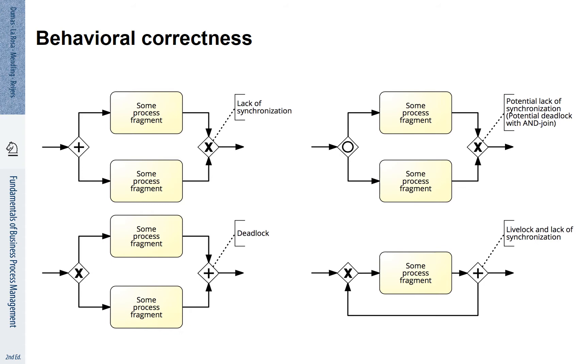On the right hand side we see an example of a potential lack of synchronization which is also a potential deadlock. The example has an OR split gateway on the left hand side. This may activate one or the other or both of the subsequent branches. If you have both branches activated you have the same problem as with the lack of synchronization. If you activate only one branch and on the right hand side is not an XOR but an AND join, you have also the situation similar to the deadlock.